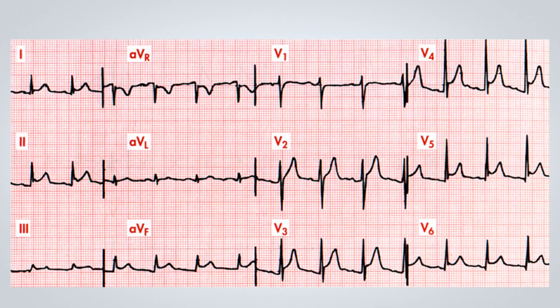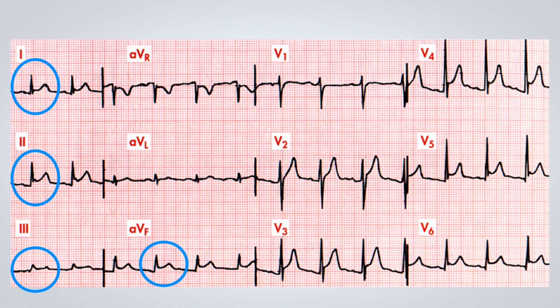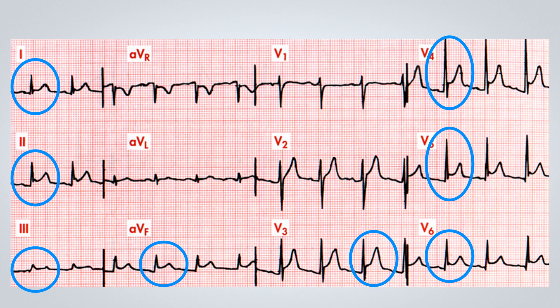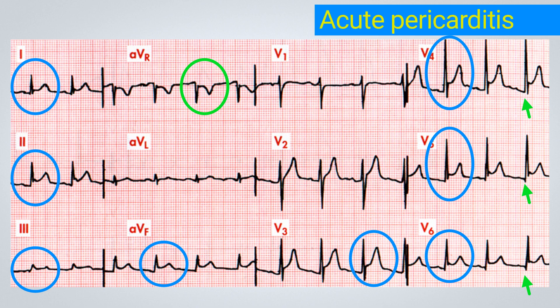Returning to the first tracing for discussion, we can observe a sinus rhythm with no alterations in the QRS complex axis or the QRS complex itself. Upon examining the ST segment, we can see an elevation in nearly all leads, most prominently in D1, D2, D3, aVF, and from V3 to V6. Additionally, we observe a depression of the ST segment in aVR, associated with an elevation of the PR segment in aVR and a depression of the PR segment, particularly in the lateral wall from V4 to V6. This case is highly consistent with an acute pericarditis presentation, as there is ST elevation in almost all walls except aVR, where we have a depression. This ECG is strongly suggestive of acute pericarditis.